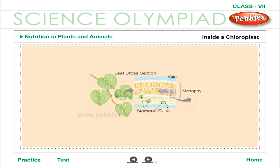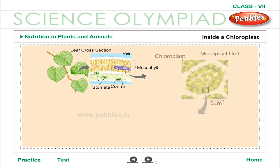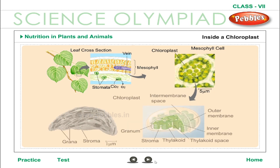Inside a Chloroplast. Inside each chloroplast, there are stacks of discs, each disc called a thylakoid. They contain chlorophyll and help to trap sunlight. The stacks of thylakoids are called grana, and the light reaction takes place here. The grana are arranged in a fluid matrix called stroma, where the dark reactions take place.